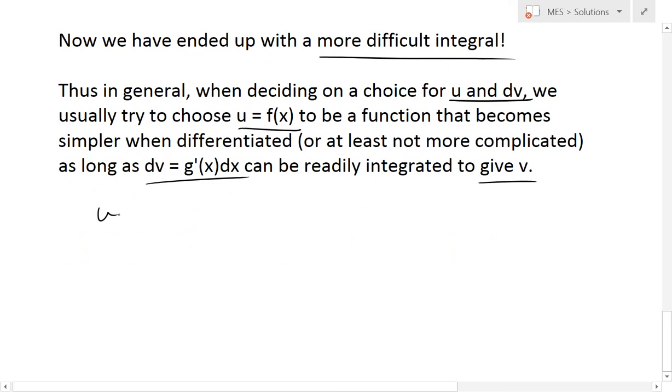Thus, in general, when deciding on a choice for u and dv, we usually try to choose u equals f(x) to be a function that becomes simpler when differentiated, or at least not more complicated, as long as dv equals g'(x) dx can be readily integrated to give v. In our case, we chose u to be x, so when you do du that becomes dx, which is simpler. The dv equals sin(x) dx, and we can easily integrate to get v, which equals negative cos(x).